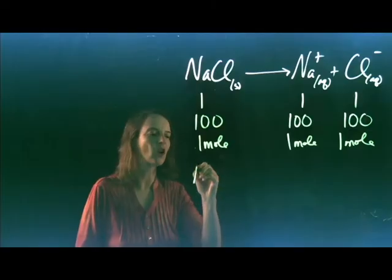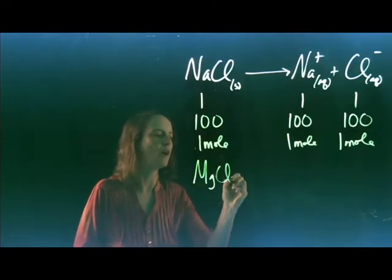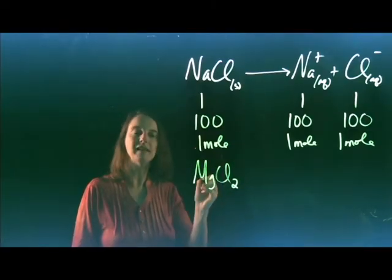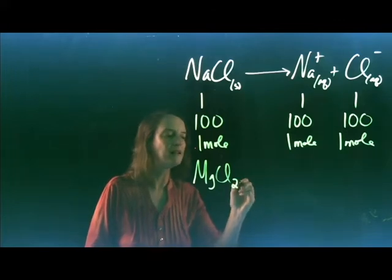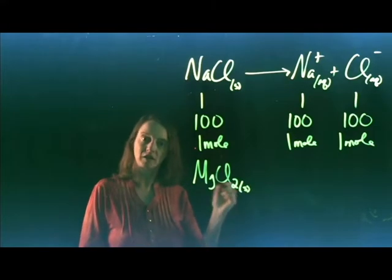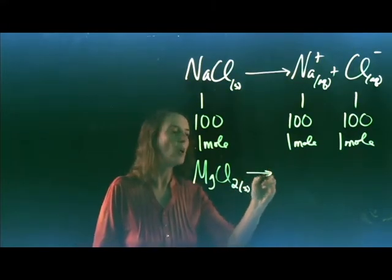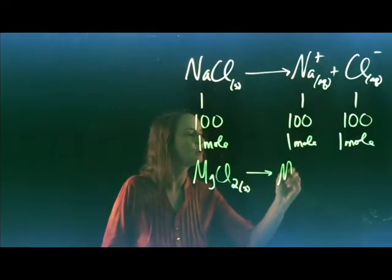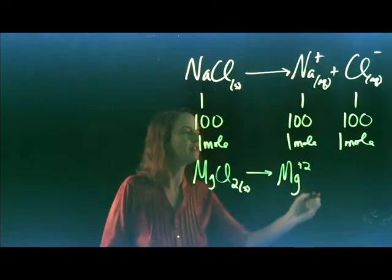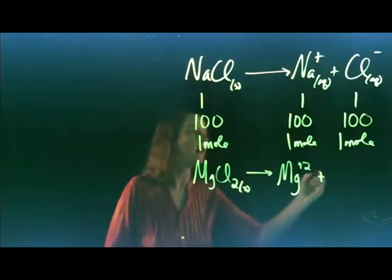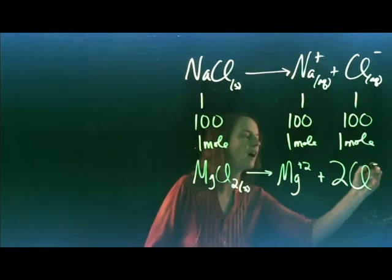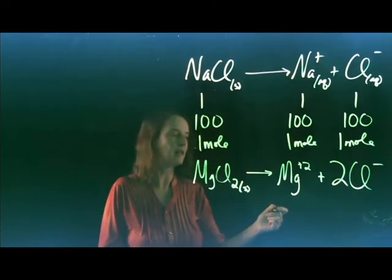Compare that to a salt like magnesium chloride. Magnesium is a group two metal. Magnesium chloride is also a solid when you pull it off the shelf, but when you dissolve it in water, you get magnesium ions and you're going to have two chloride ions for every one magnesium ion.